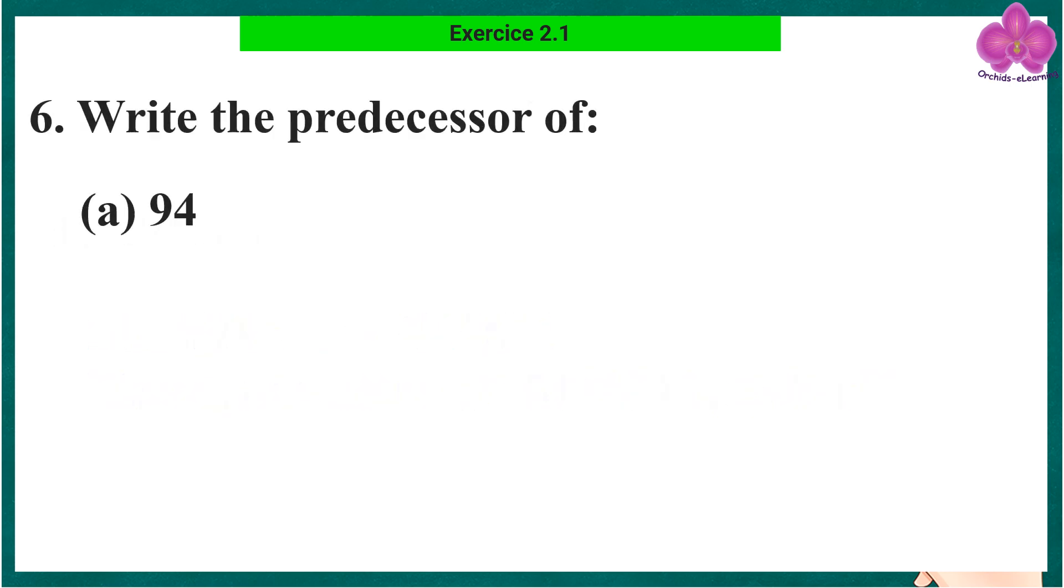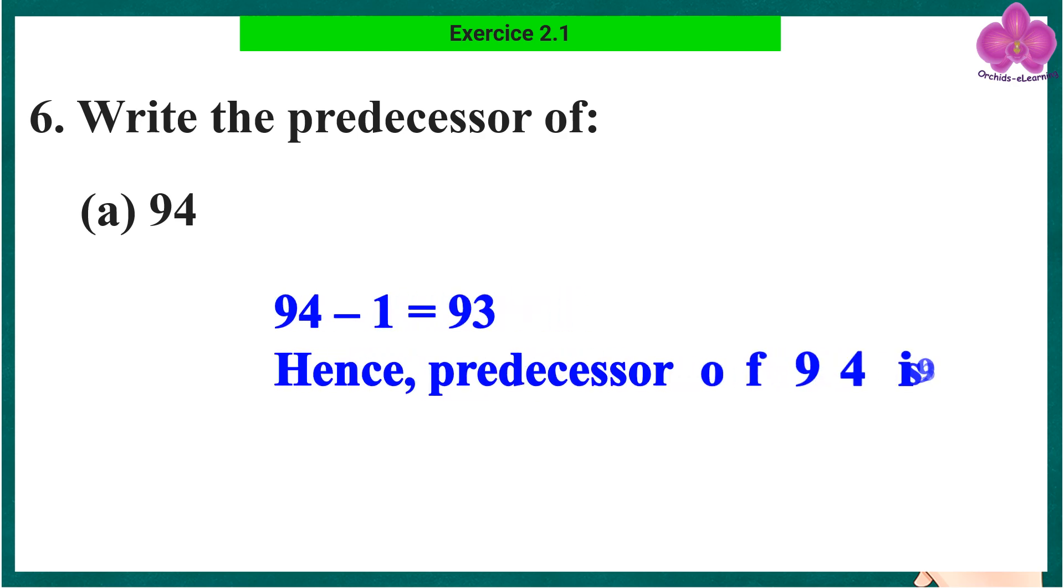Question 6: Write the predecessor of the given numbers. Part a: 94. 94 minus 1 equals 93. Hence, predecessor of 94 is 93.